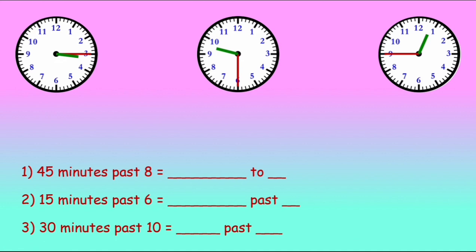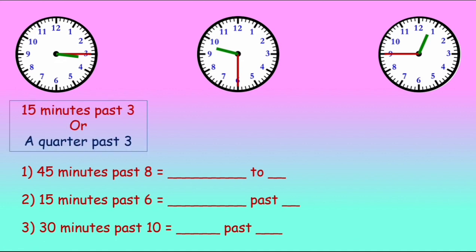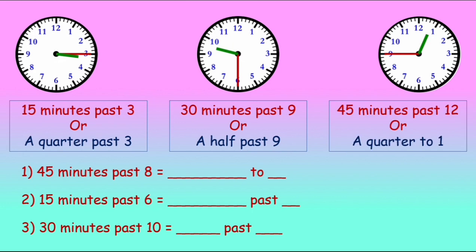It is 3:15, so it will be 15 minutes past 3 or a quarter past 3. The next one has covered half, so it will be 30 minutes past 9 or half past 9. And the last one will be 45 minutes past 12 or a quarter to 1.